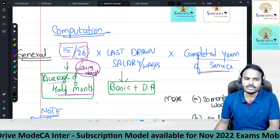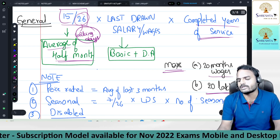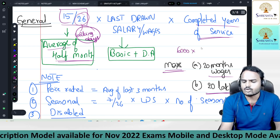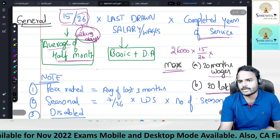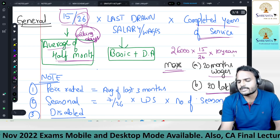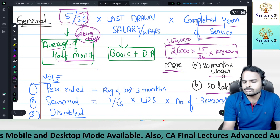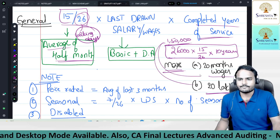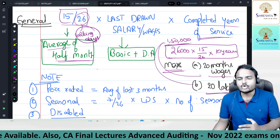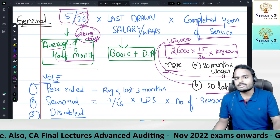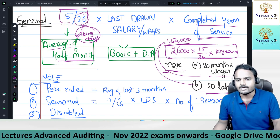The maximum gratuity payable is 20 months' wages or 20 lakhs. Example: last drawn salary 26,000 rupees, worked 10 years — 15/26 × 26,000 × 10 = 1,50,000 rupees. If by calculation an employee gets 43 lakhs, he can demand only 20 lakhs — there is no obligation on the employer to pay more than 20 lakhs. However, if the employer voluntarily pays more, the employee can claim that amount.